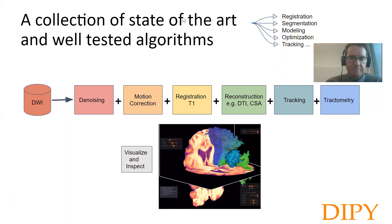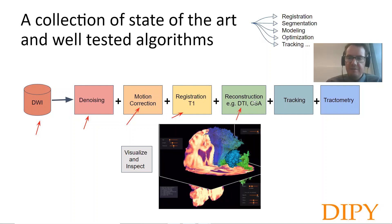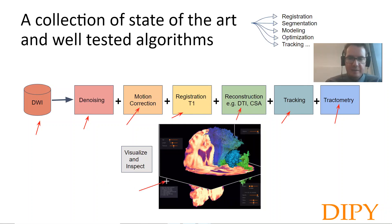Here is an example pipeline. We get some DWI diffusion datasets from the scanner. Then we can do denoising, then maybe motion correction, then registration with a T1, then reconstruction with DTI or another method like the constant solid angle method, and do tracking and tractometry. In each of these steps you need to do data analysis, but also visualize and inspect. All these steps are provided by DiPy.